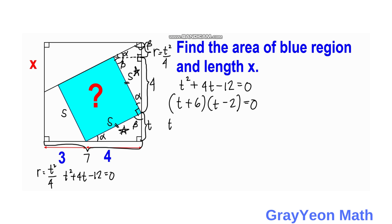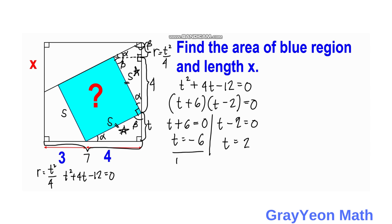The factors are (t + 6)(t − 2) = 0, so t + 6 = 0 giving t = −6, and t − 2 = 0 giving t = 2. Since one answer is negative, that value is invalid, so we use t = 2.